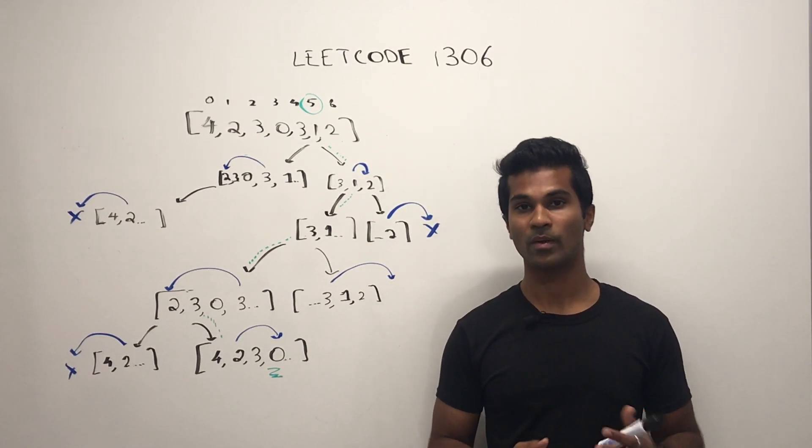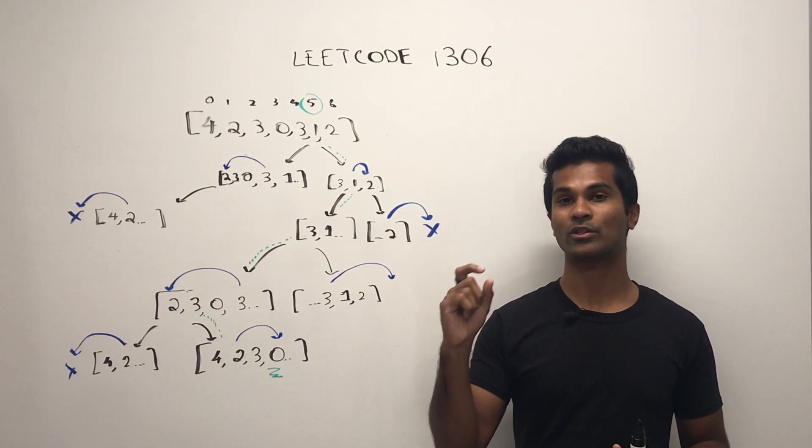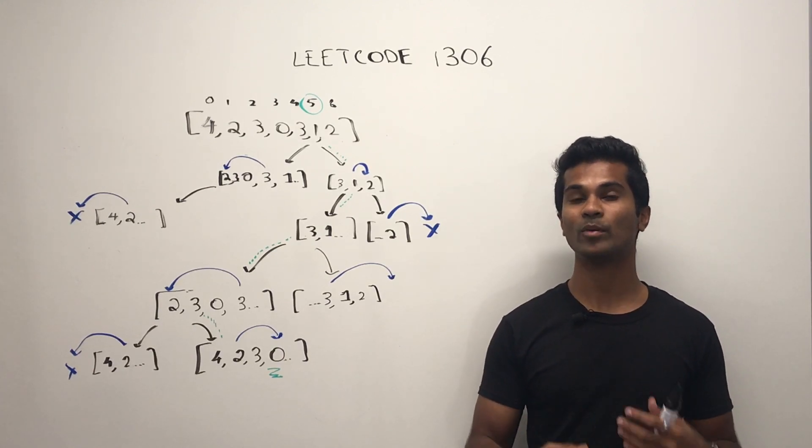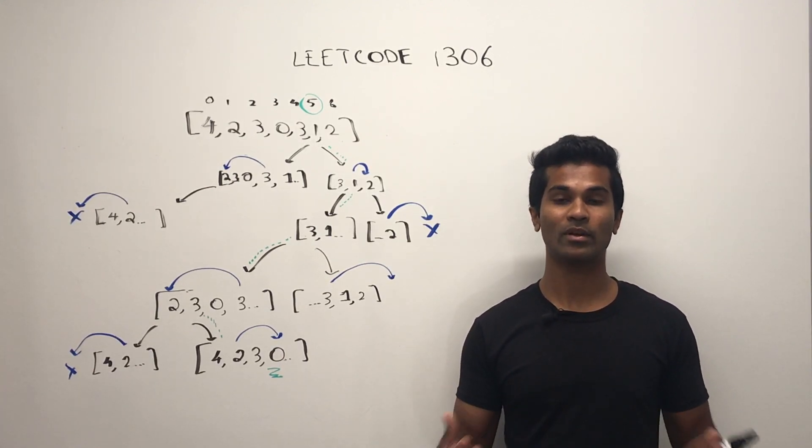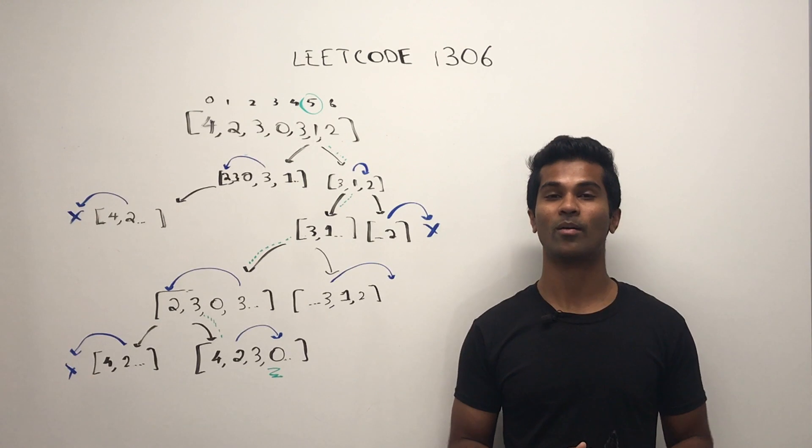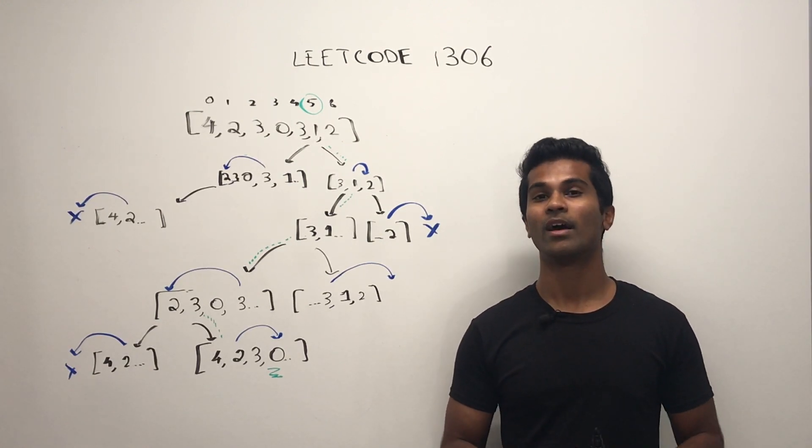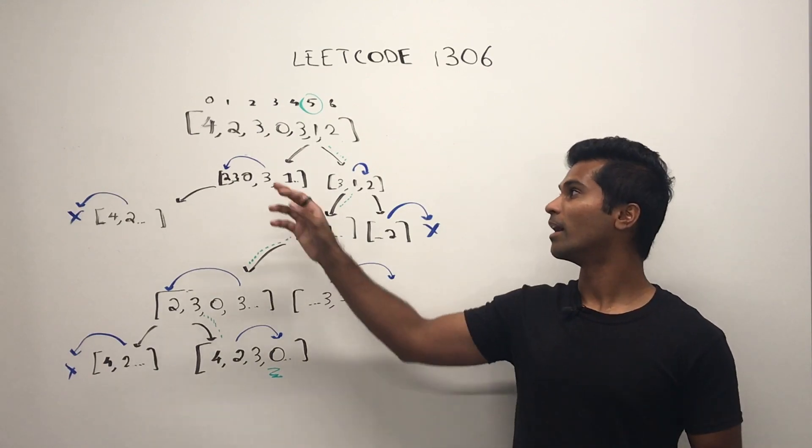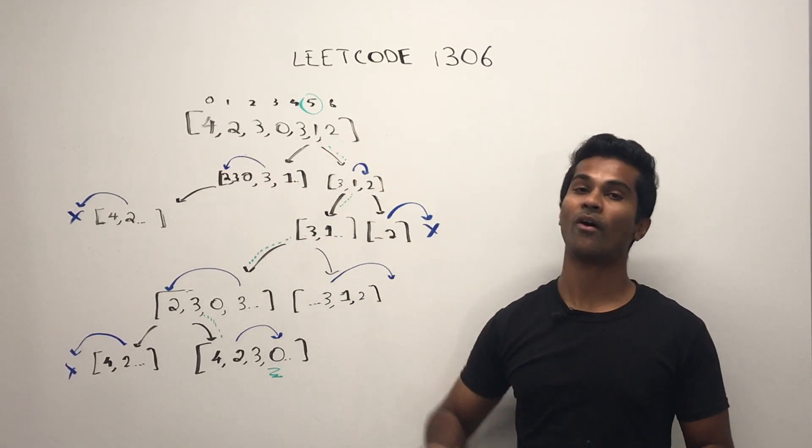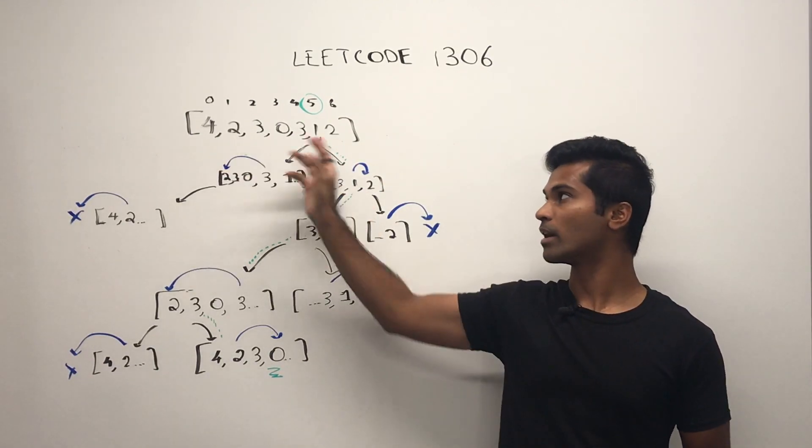Well, to prune the tree, what we should do is keep an extra integer which counts how many states we've checked. Now, it doesn't make sense to check more times down the recursive stack than the number of spots there are in the array, right?